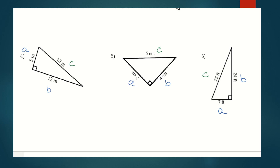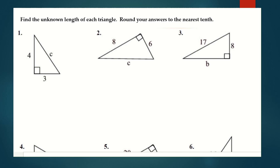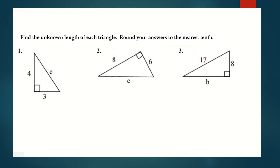This is just getting us familiar with the right triangle — what represents a leg, and how we know which side is the longest. The hypotenuse is always across from the 90-degree angle. Now we're actually going to apply the Pythagorean theorem: A² + B² = C², where A and B represent the lengths of the legs and C represents the hypotenuse.